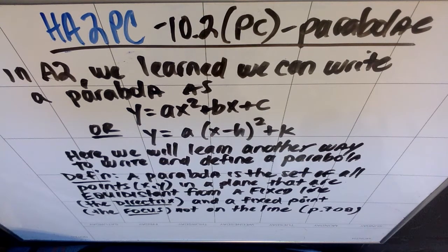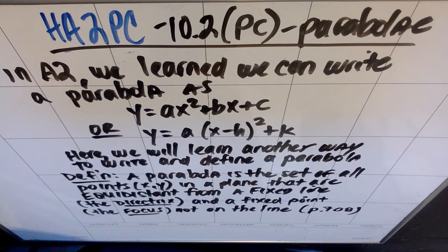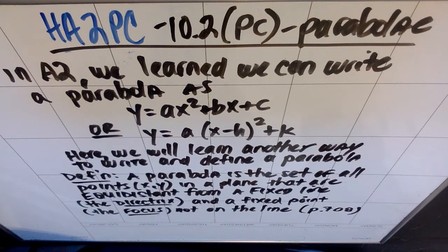The definition of a parabola is that it is the set of all points, x comma y, in a plane that are equidistant from a fixed line, which we call the directrix, and a fixed point, which we call the focus, not on the line.